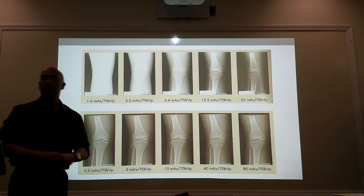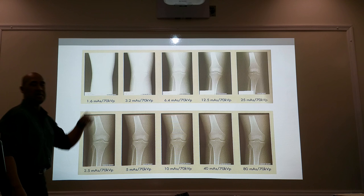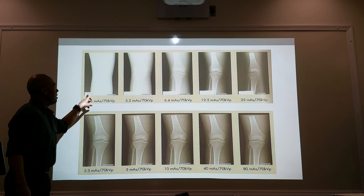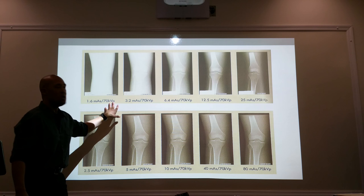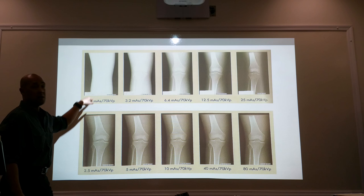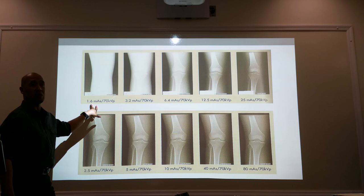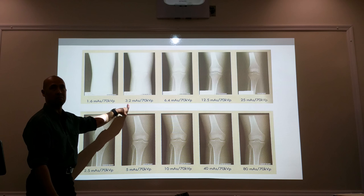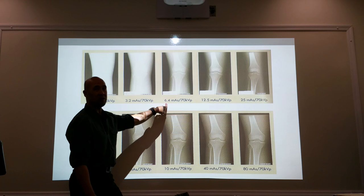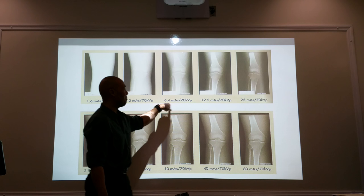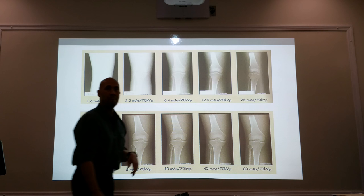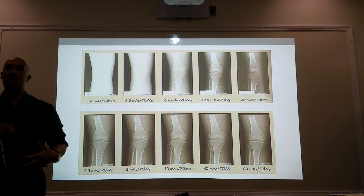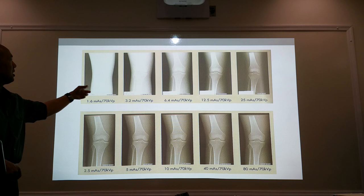Here we have two studies of the knee. Up here is the radiographic study utilizing film, with KV remaining constant at 70 KV. With the first image we used 1.6 mAs — too light. We doubled the exposure to 3.2 — still light. Doubled again to 6.4 — getting there. From 6.4 to 12.5 — looks pretty good. At 25 it looks even better. With film, you were able to assess patient exposure by looking at the exposure of your film. Your film was the telltale of your patient exposure.